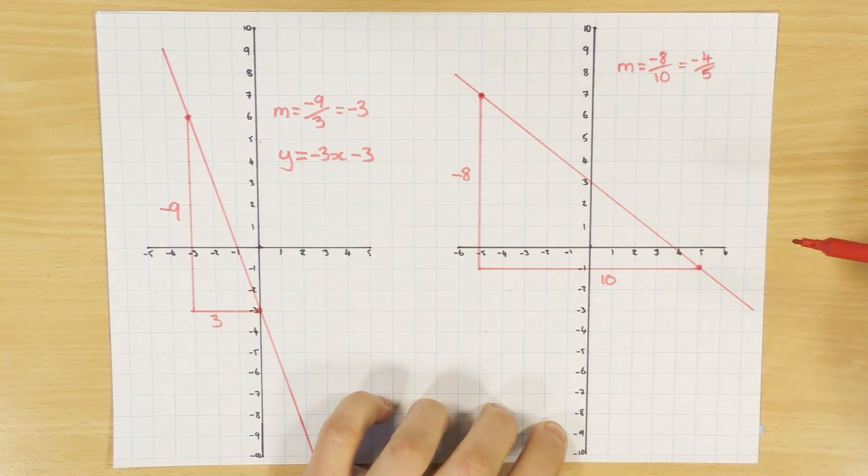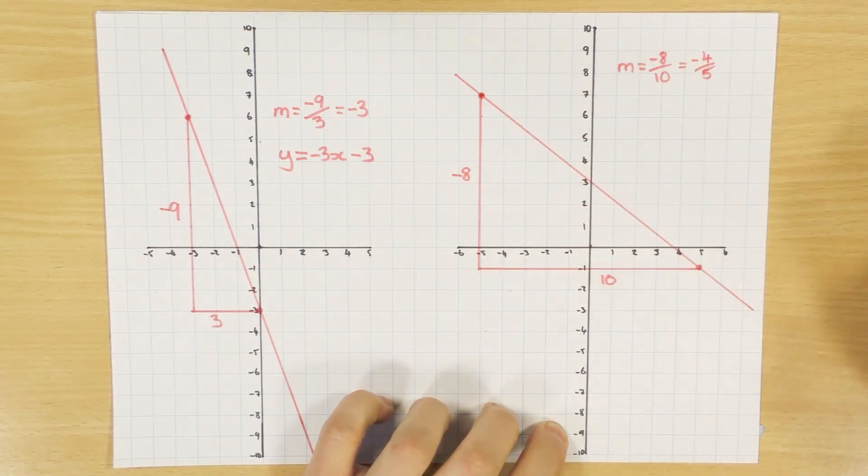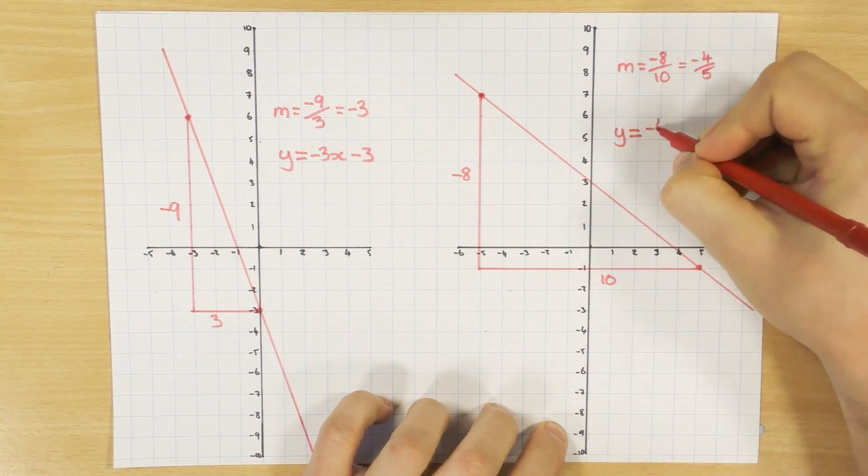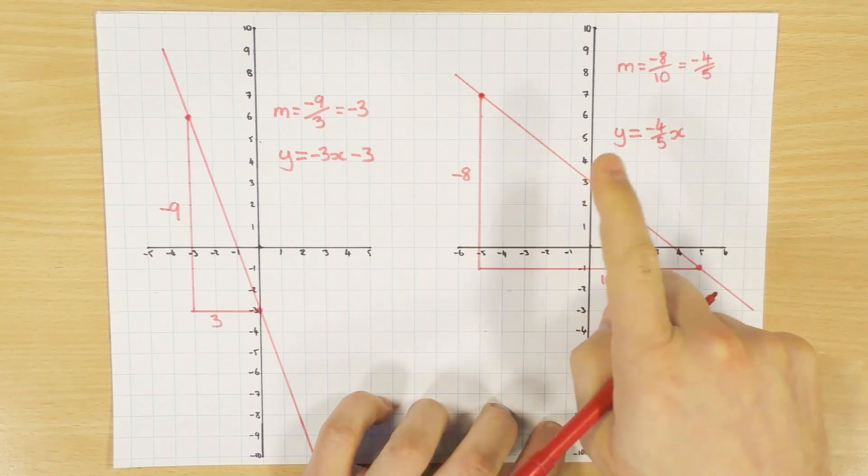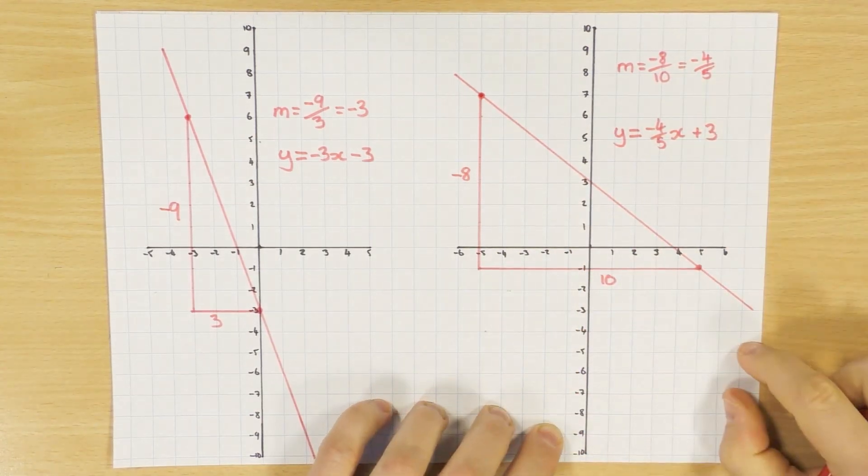And then the rest of it is exactly the same. Substitute it into the general equation. So y equals minus 4 fifths x. Where does this cross the y-axis? It crosses at 3. So plus 3.